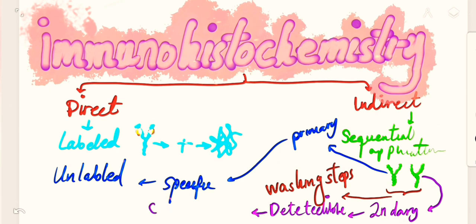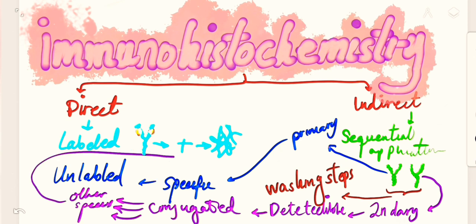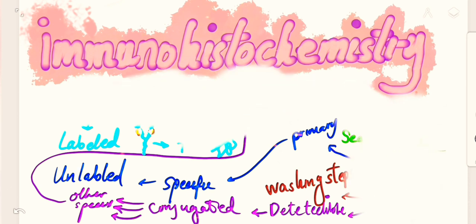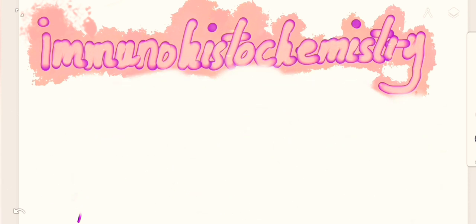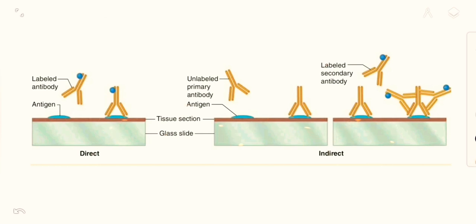This detectable antibody is going to be conjugated in another species different from the species that has synthesized or produced the primary antibody. As visible in this figure, the direct form and the indirect form of immunohistochemistry can be seen very easily. You can look at it and see for yourself how it is done.